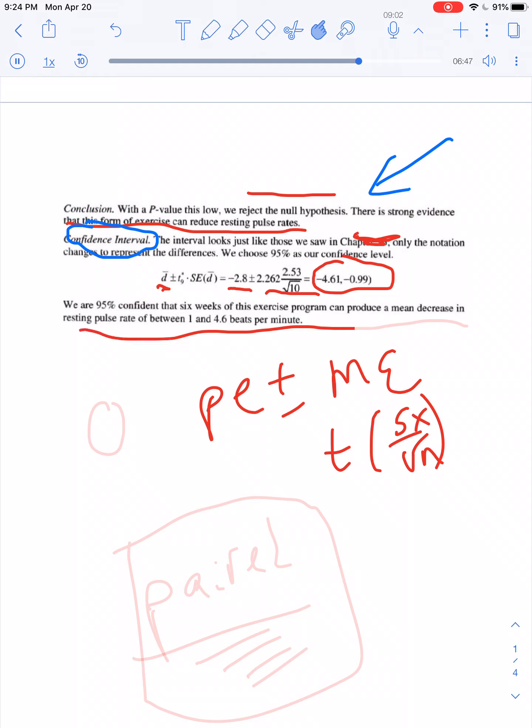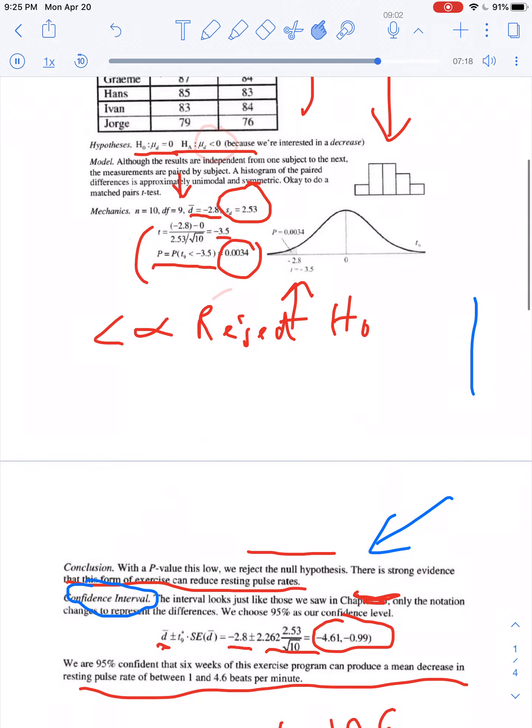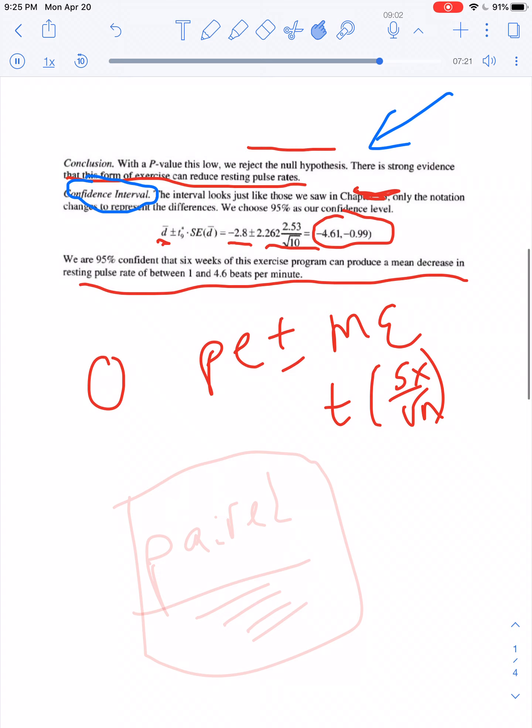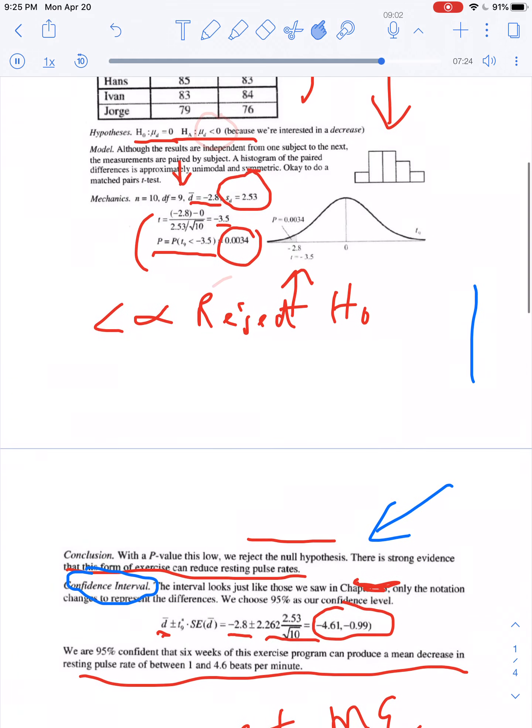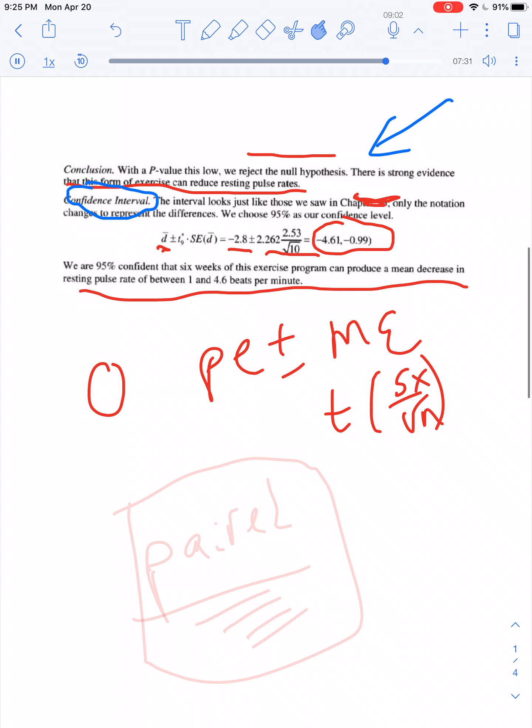So, we are 95% confident that 6 weeks of this exercise program can produce a mean decrease in resting pulse rate between 1 and 4.6 beats per second. Notice 0, if there was no difference, is not in that interval, and that's where we reject. If the null is not in the interval, then you would reject the null and take the alternative hypothesis, which in this case is that it is lower based upon having your exercise. So, this is combining both the hypothesis test here and the top one, where we get a very low p-value. So, we reject, and you basically get the same information by doing a confidence interval because 0 does not show up in that interval. Therefore, we know we should reject the null as well.